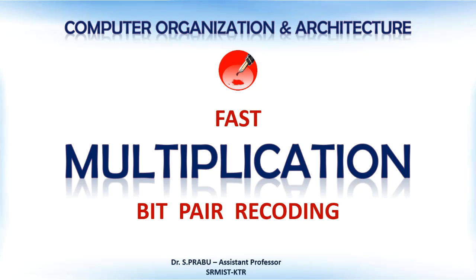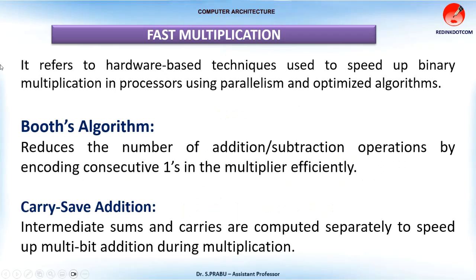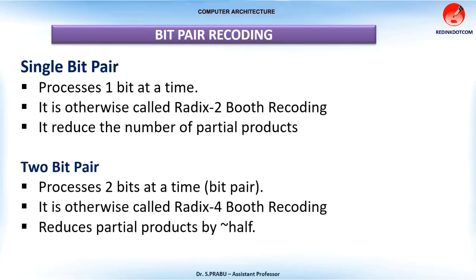Hello students. Here we are going to learn how fast multiplication can be achieved by bit pair recoding. Fast multiplication can be achieved by either Booth's algorithm or carry save addition. In Booth's algorithm, we can recode the multiplier by means of bit pair recoding.